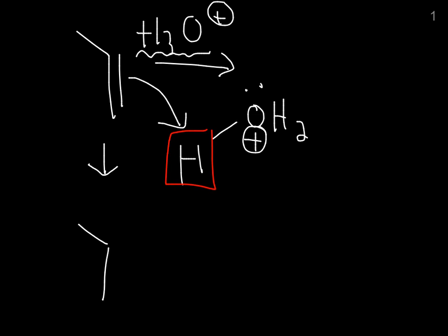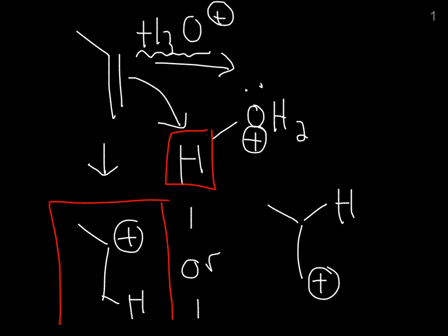So you're either going to get a carbocation here with the hydrogen, or you're going to get a carbocation here with the hydrogen there. And remember, a more substituted carbocation is more stable. So clearly, this is the more stable carbocation, which means it reacts faster, which means it's the dominant product.